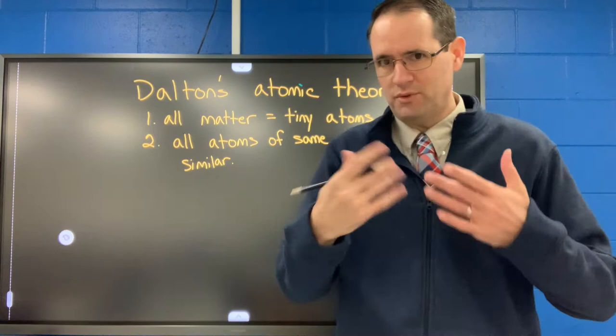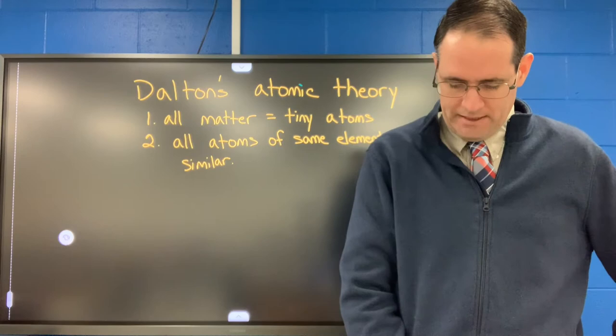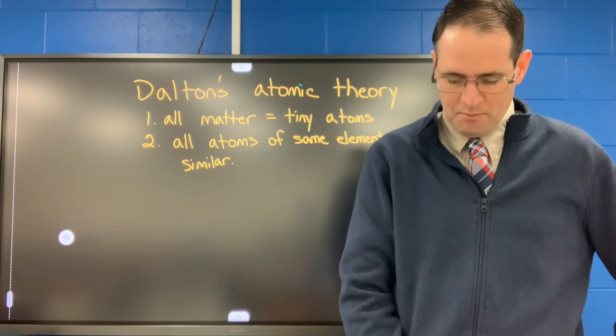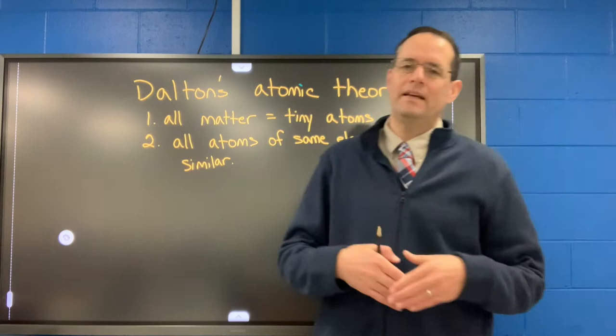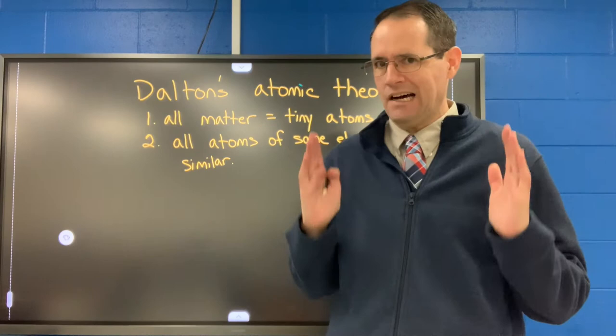Number three: atoms of two or more different elements combine to form compounds. This is very critical. A particular compound is always made up of the same kinds of atoms and always has the same number of each kind of atom. We talked about water — it has the chemical formula H₂O, formed from two hydrogen atoms and one oxygen atom. It's always those atoms, always in that ratio — a constant composition.